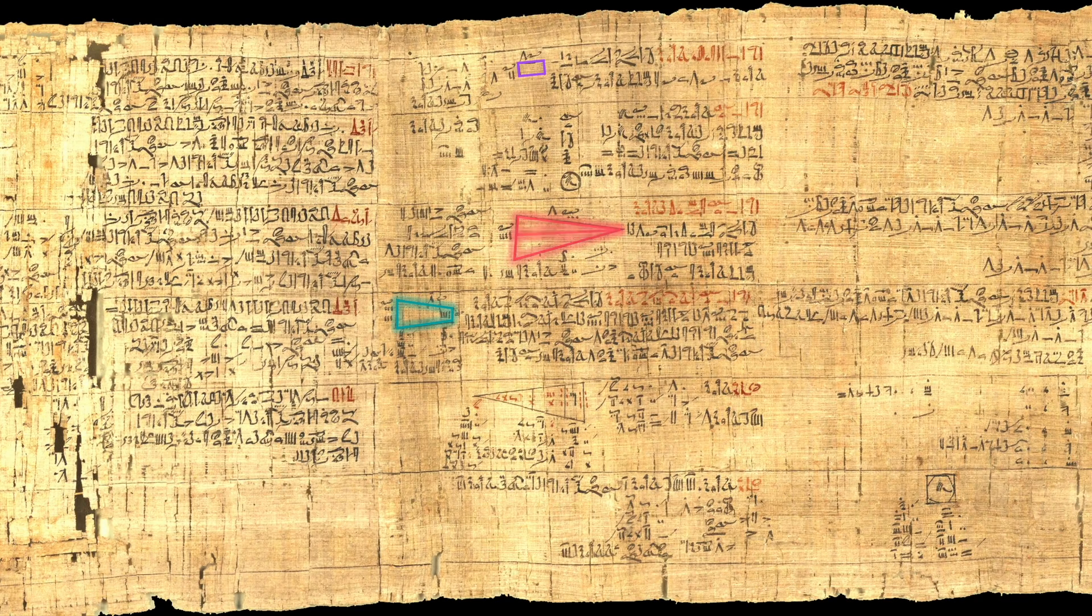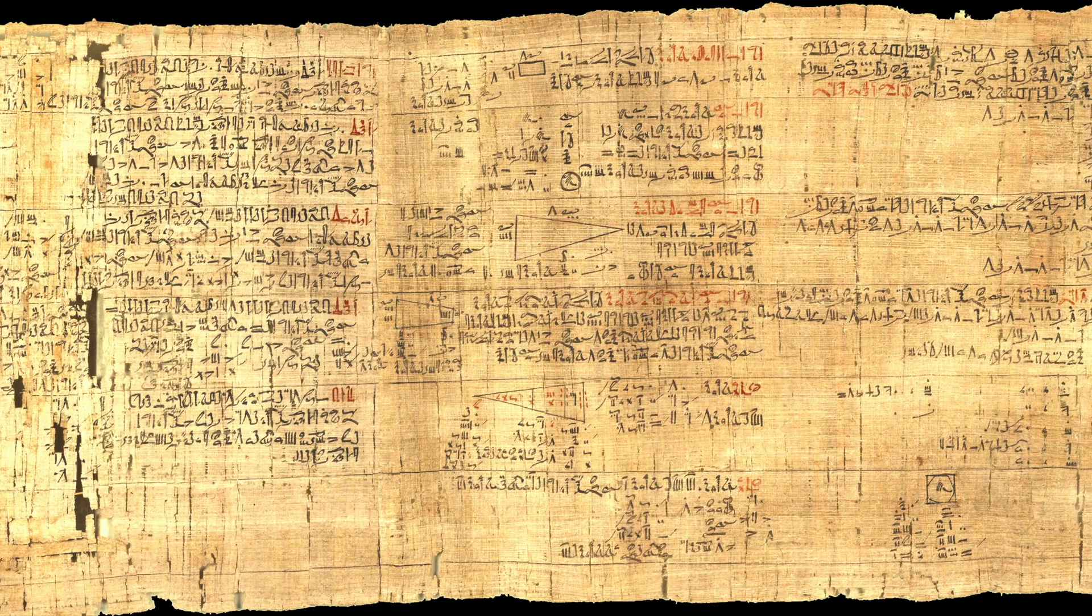Another shape mentioned in the papyrus is a trapezoid, which again it talks about transforming it into a rectangle, which we can achieve using the dissection method. It is believed that the ancient Egyptians used the dissection method to calculate areas and volumes of different shapes.